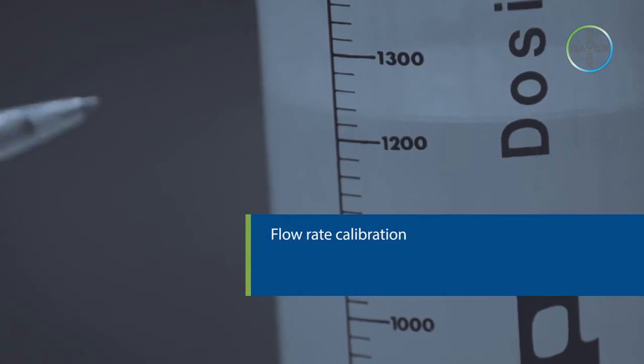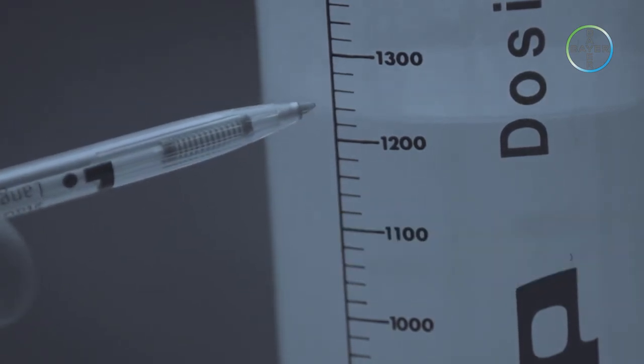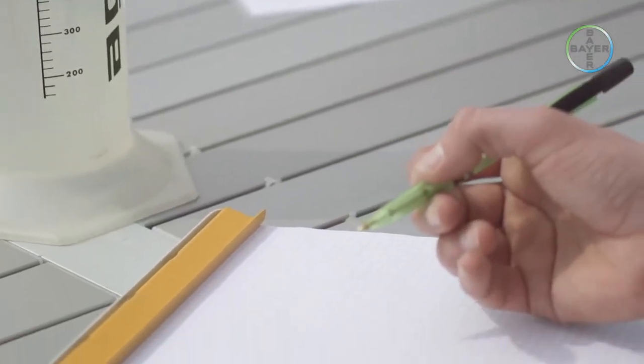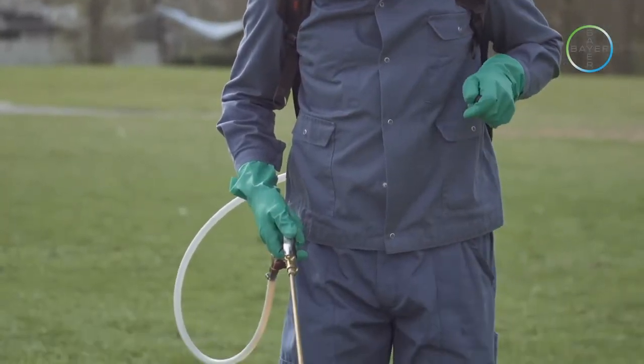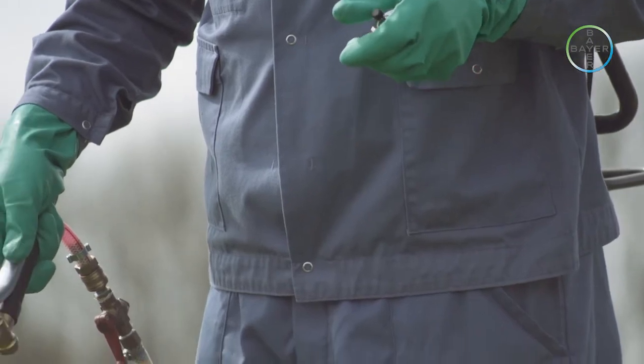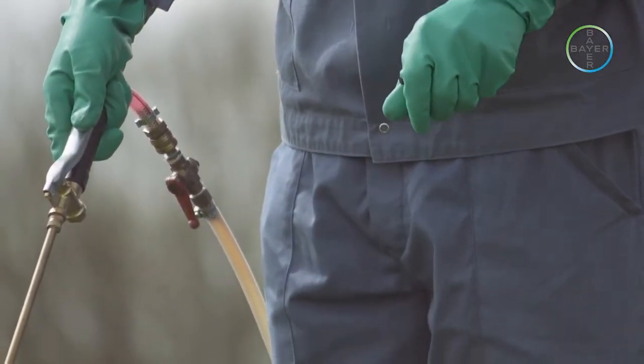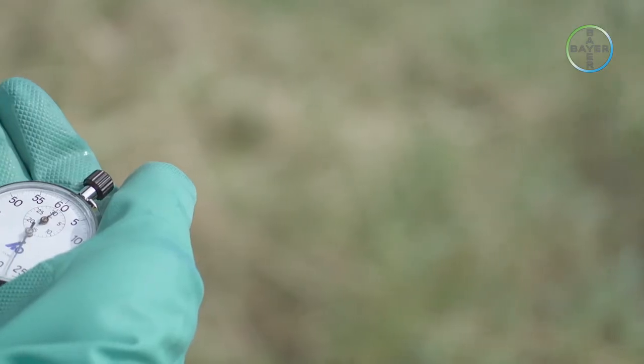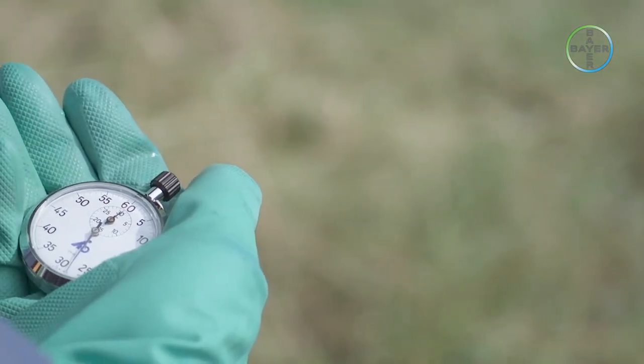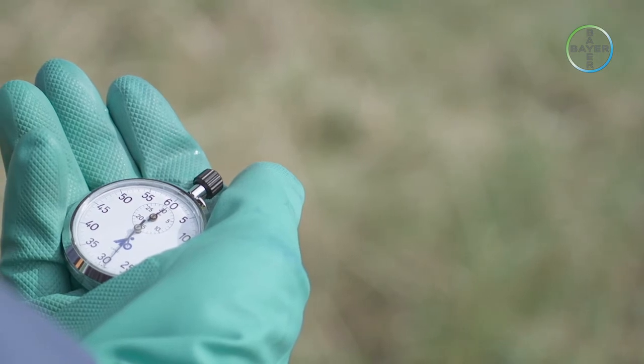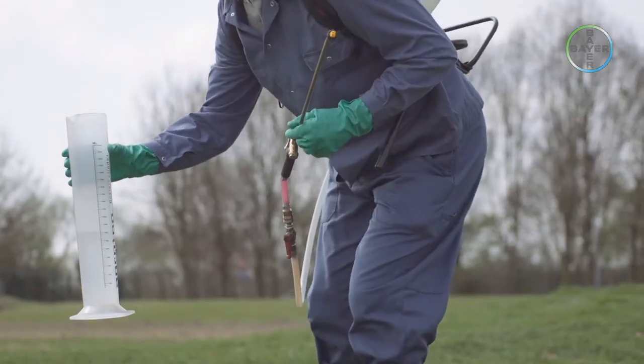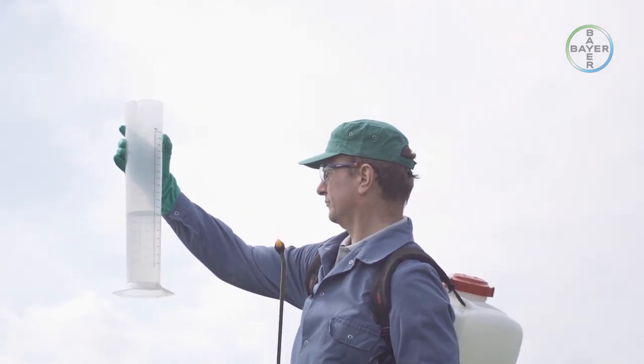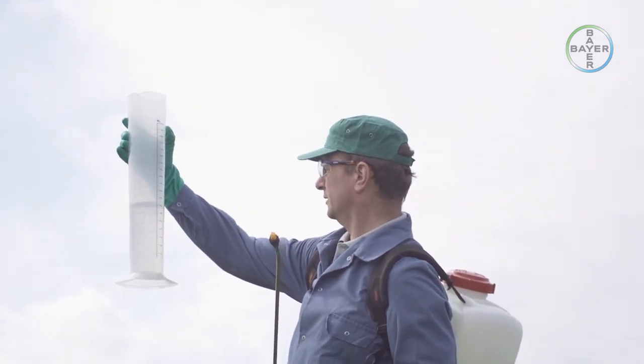Next we must calibrate the flow rate. Measure the output of the nozzle in liters per minute. Generate some pressure using the pump handle. When the knapsack is up to pressure, release the trigger and hold the nozzle right into the measuring cylinder. Time for exactly one minute whilst pumping continuously, as close as possible to a typical operation in the field. The measured output is the flow rate expressed as liters per minute: 0.8 liters per minute.